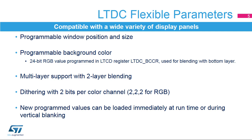Dithering: 2 bits per color channel, 222 for RGB. The dithering pseudo-random technique is used to add a small random value or threshold to each pixel color channel — R, G, or B — value, thus rounding up the most significant bits in some cases when displaying 24-bit data on an 18-bit display.